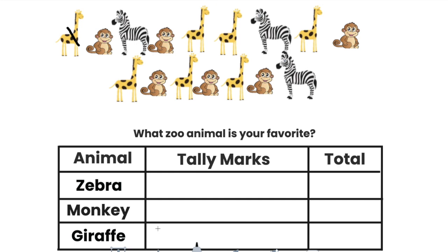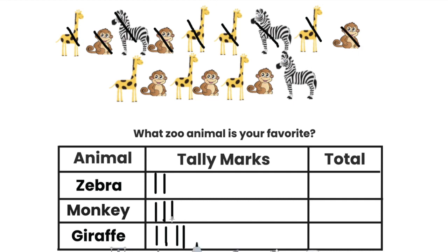I have one giraffe, a monkey, a zebra, another monkey. Now I have another giraffe, another giraffe — whoa, it looks like giraffes are in the lead! Here's a zebra, another giraffe — that's four. Another monkey. Whoa, we have another giraffe — what should I do with this fifth tally mark? That's right, go ahead and draw the diagonal. Then I have another monkey, another giraffe, another monkey — remember, I have to draw my diagonal. Another giraffe, another giraffe, a monkey, and then a zebra.